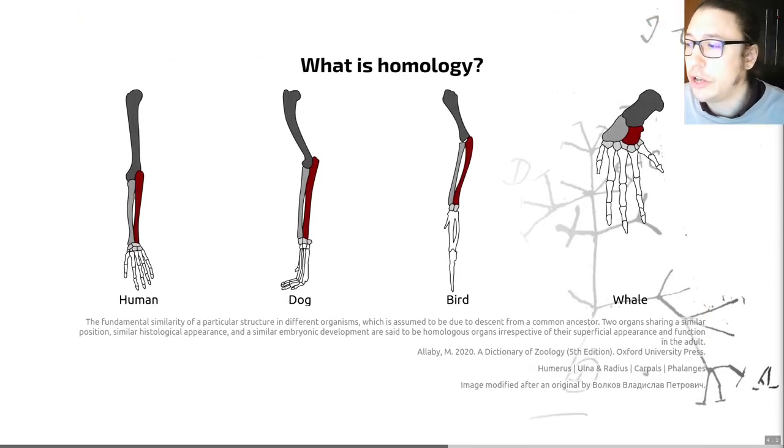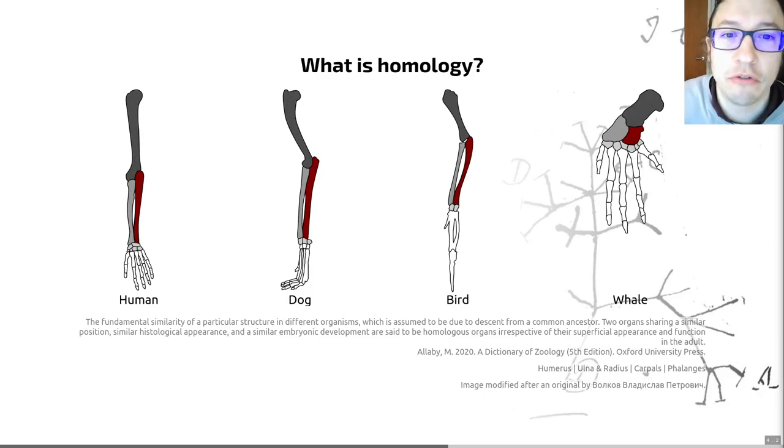Now the definition of homology is on the slide for you here. This is the fundamental similarity of a particular structure in different organisms which is assumed to be due to descent from a common ancestor. So homology is basically similarity due to shared ancestry between different groups. The character similarities across a group of organisms reflect the evolutionary history of a group.